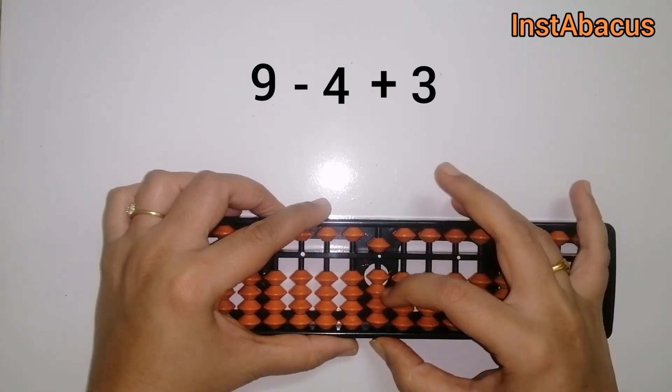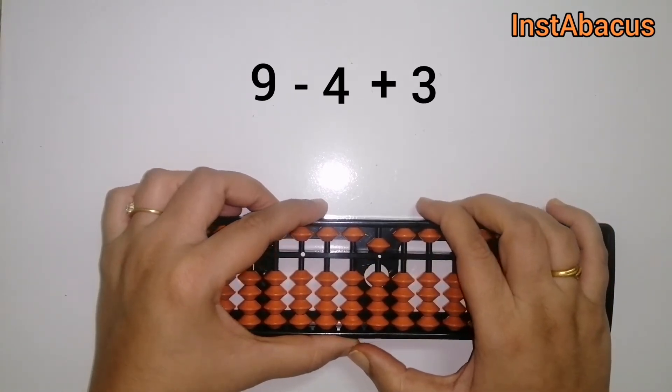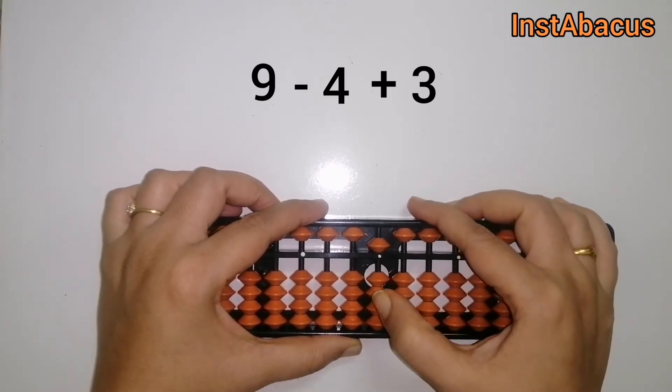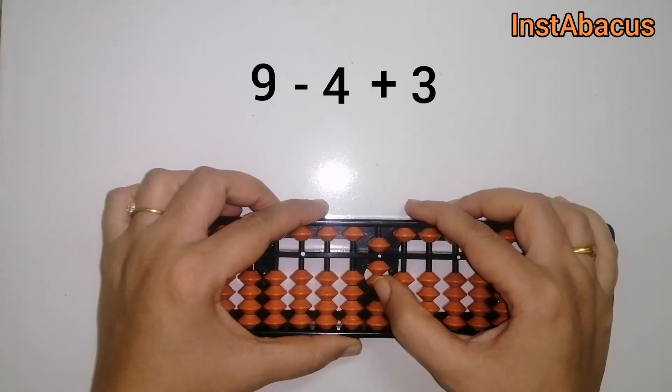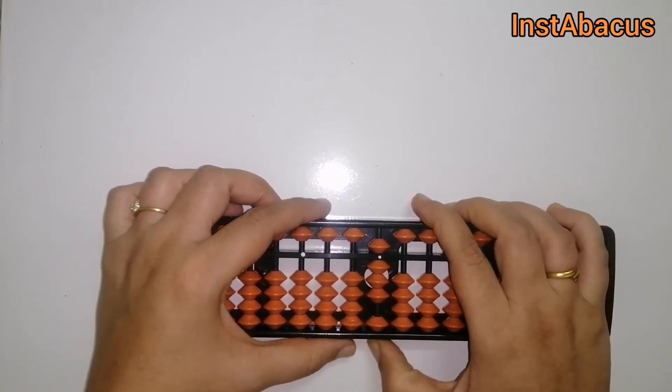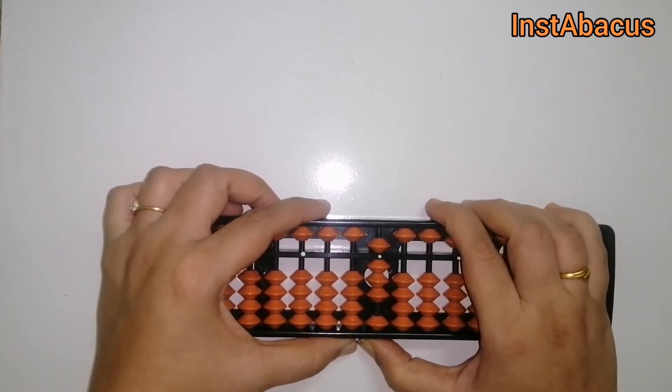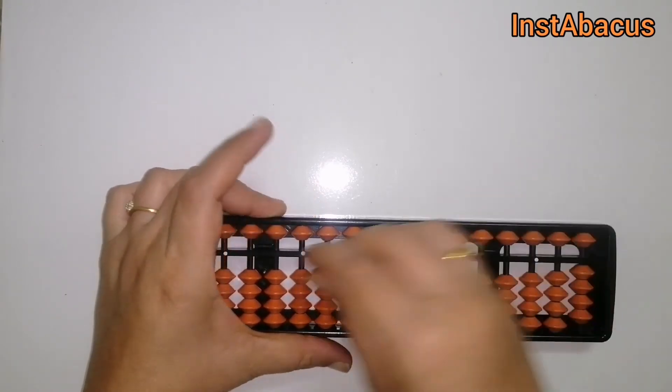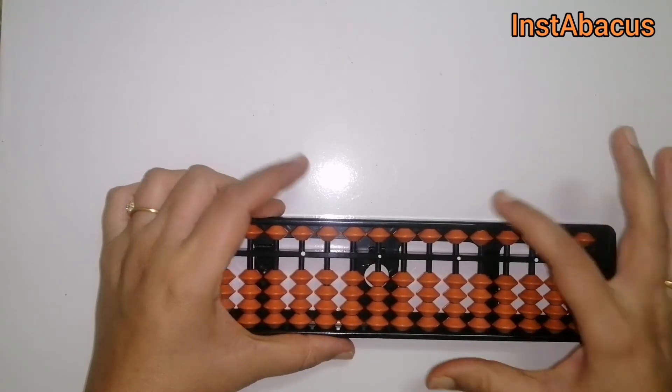Right, and then we are going to add 3 by moving 3 earthly bits up towards the answering bar again. So the answer is 8, that's correct. 9 minus 4 plus 3 that is 8.